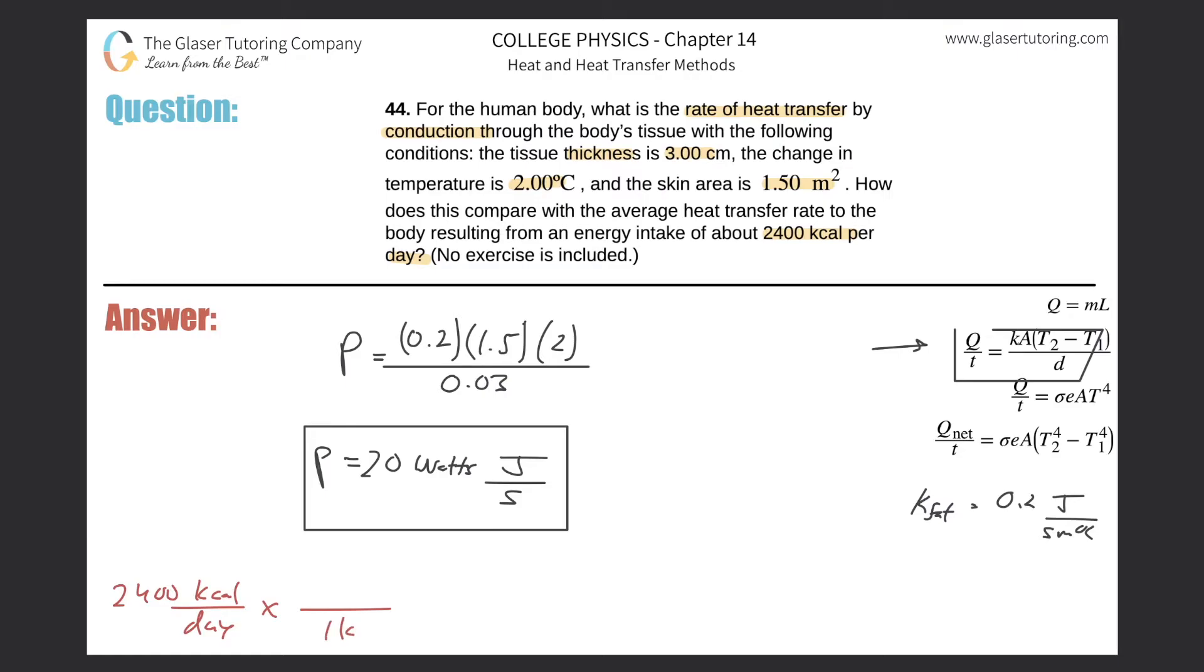So 2400 times 4184, and that's going to be about... I'm going to just round here, this is so close. It's going to be about one times 10 to the... what is that, three, six, seven. So it's about 10 to the seventh joules.